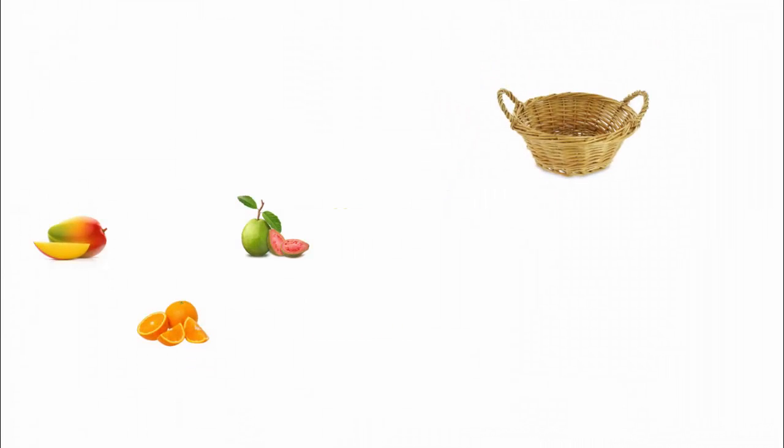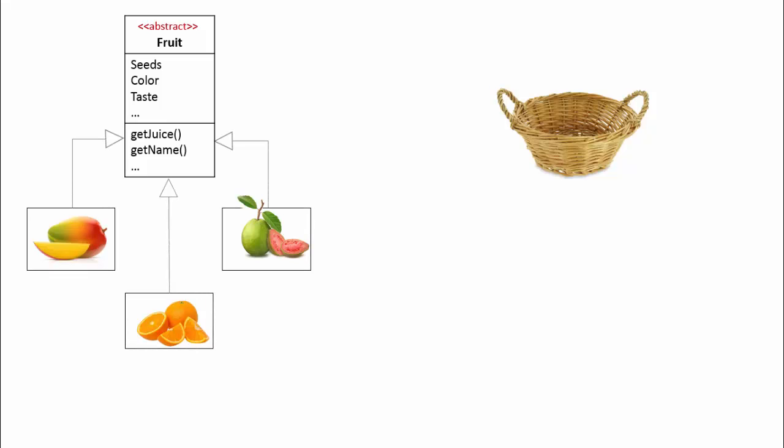Let us find the answer. In real world, we can call something as fruit which has a common properties of a fruit like seed, color, taste, etc. Further, we extract juice from them. They have a name. So a fruit is a logical abstract entity. It does not exist but its concrete subclasses like mango, orange, guava do exist. A fruit is a concept so it is abstract class and we cannot have a real object of it. This is reason why Jill could not follow the instruction written by Jack.